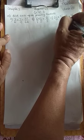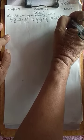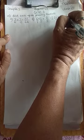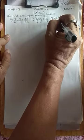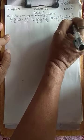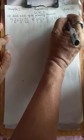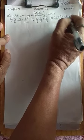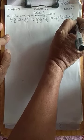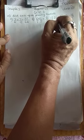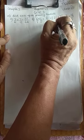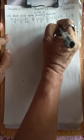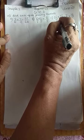Now multiply: 7×16. 7×6 is 42, carry 4, 7×1 is 7 plus 4 is 11. So the answer is 112 by 3×5 which is 15.